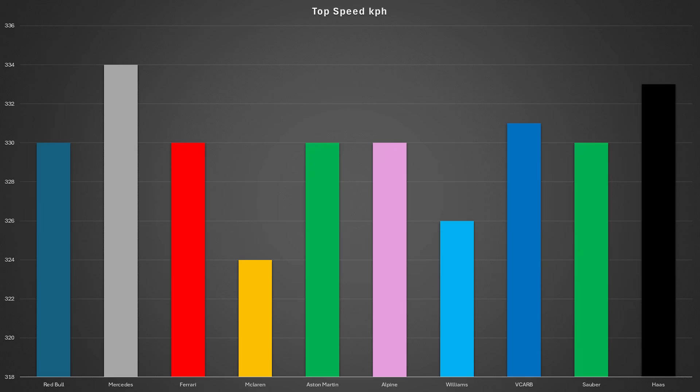Let's look at the top speeds from each team in FP2. Taking the fastest lap time from each team, the team with the highest top speed was Mercedes as George Russell was able to reach 334 km/h. That is 10 km/h more than the slowest car in a straight line which was the McLaren. This shows Mercedes may have had things turned up more than their rivals, which given they didn't finish first today could be a little bit of a worry.